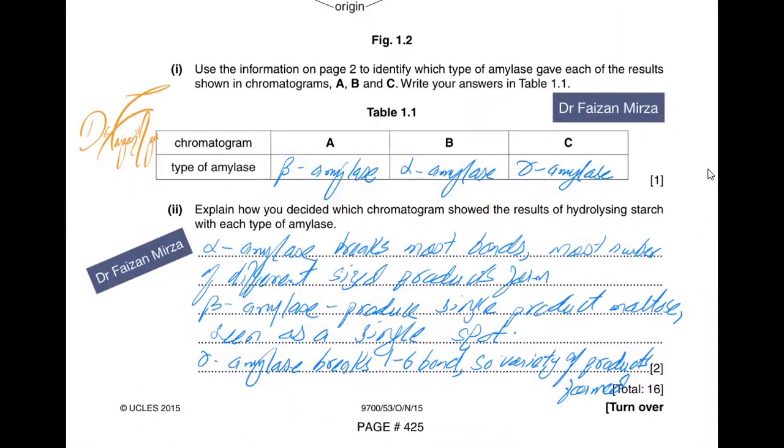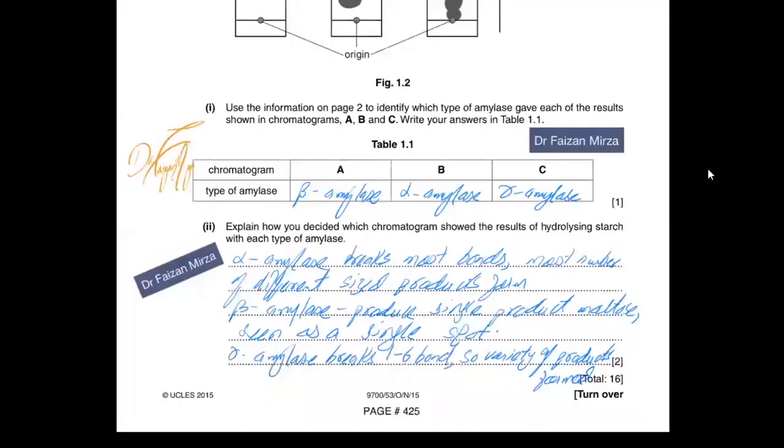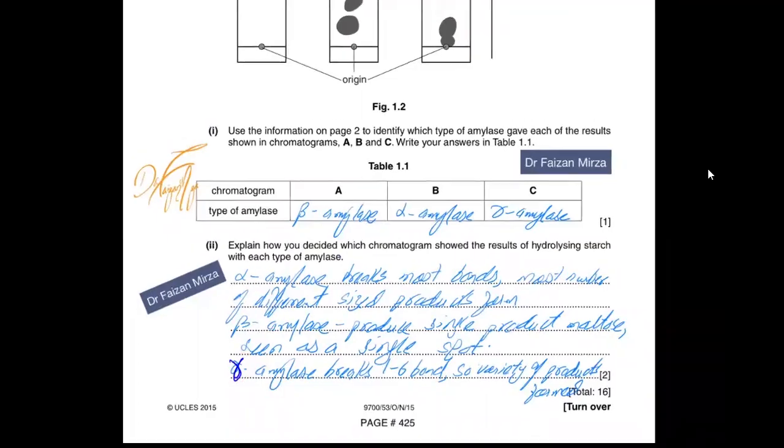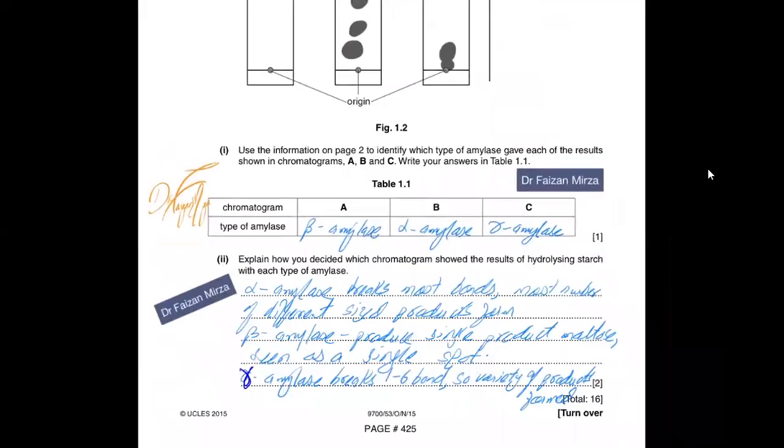Explain how you decided each chromatogram show the results of hydrolyzing starch with each type of amylase. So we know that alpha amylase break most bonds, most number of different size products will be formed. Beta amylase produced single product, maltose seen as a single spot. Gamma amylase breaks 1,6 bonds. So variety of products are formed because of that. So this gamma amylase actually tells us that how these multiple products are, these are the multiple products here. You can see of varying sizes near the origin.